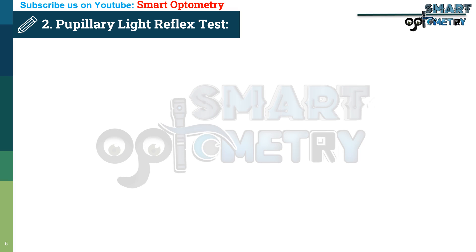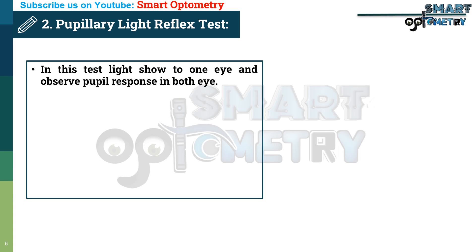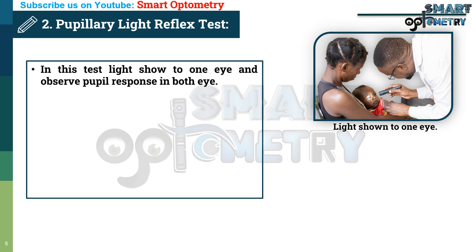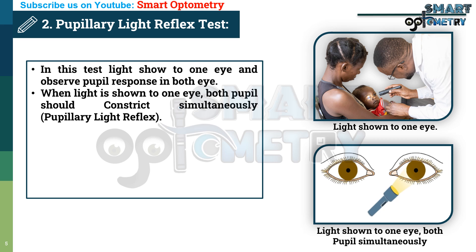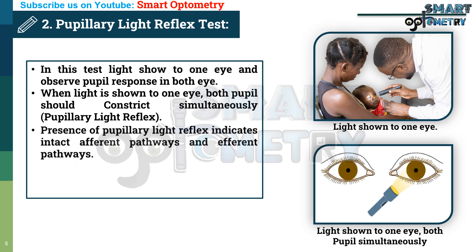Pupillary light reflex test: In this test, light is shown to one eye and the pupil response in both eyes is observed. When light is shown to one eye, both pupils should constrict simultaneously. That is called the pupillary light reflex. Presence of pupillary light reflex indicates intact afferent pathways and efferent pathways.